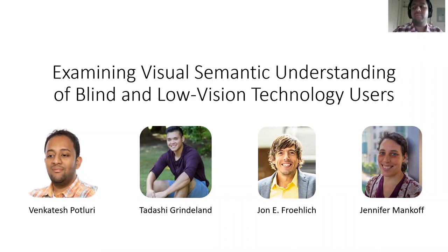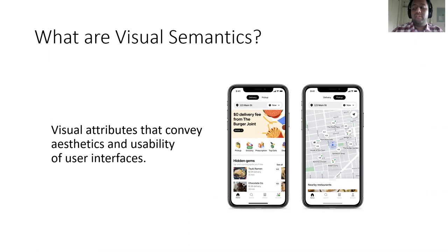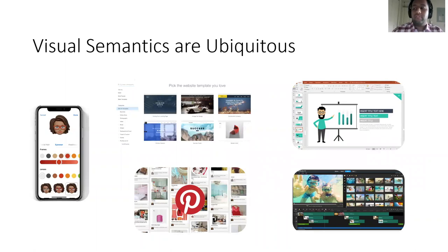Visual semantics are attributes of user interfaces that convey aesthetics like spacing between different elements on the UI and that convey how to use the interface like the iconography of different elements on the UI. More broadly, visual semantics are everywhere — from editing TikTok videos to editing our websites to making a presentation — and in this work we talk about visual semantics of user interfaces.